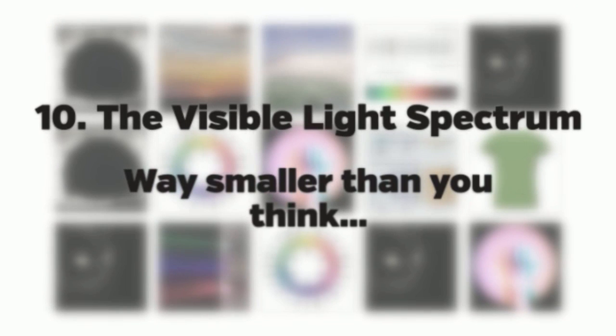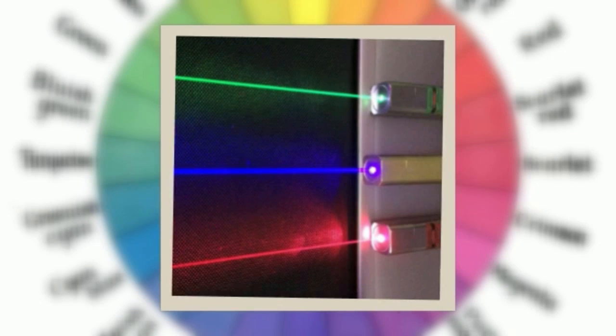10 Illuminating Facts About Light and Color. 10. The Visible Light Spectrum. Light is basically invisible energy traveling through space.